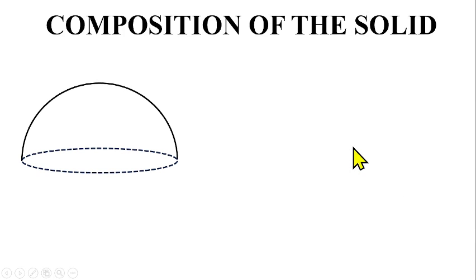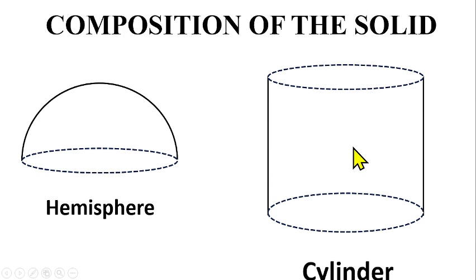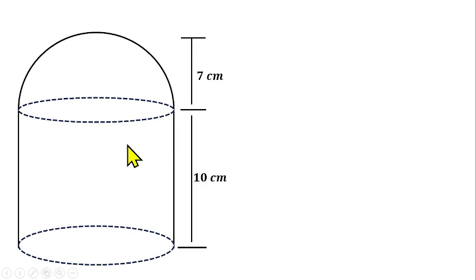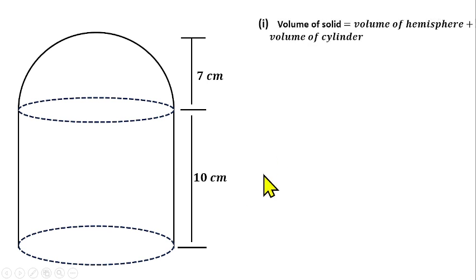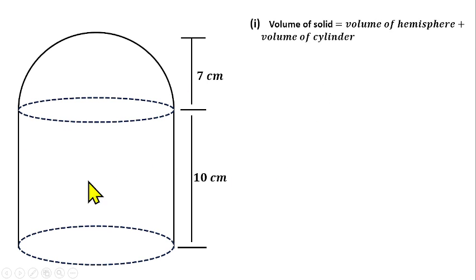Let's find the volume of the solid shape given to us. From the diagram we can see that the radius of the hemisphere is 7 centimeters, and we are also given the height of the cylinder which is 10 centimeters. To find the volume of this solid shape, all you need to do is find the volume of the hemisphere plus the volume of the cylinder.